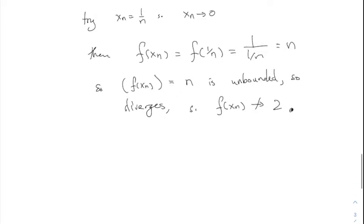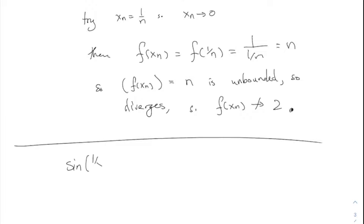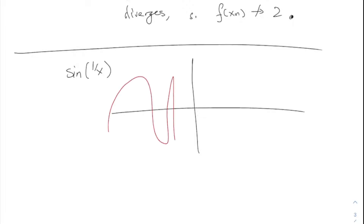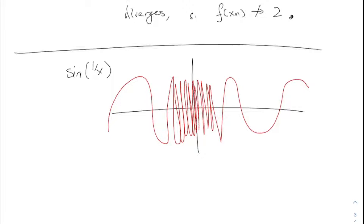A similar example is sine of 1/x — a function we saw last time whose graph looks like sine waves accelerating toward the origin. For this function, x equals zero is outside the domain, so I don't even discuss whether it's continuous or not at the origin. If you plug in an arbitrary value at zero, it won't be continuous, but the original function itself simply doesn't have zero in its domain.